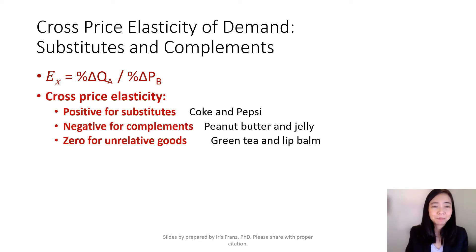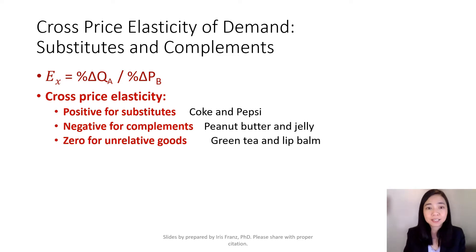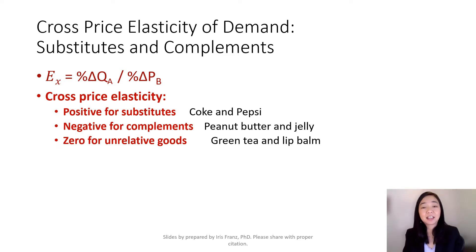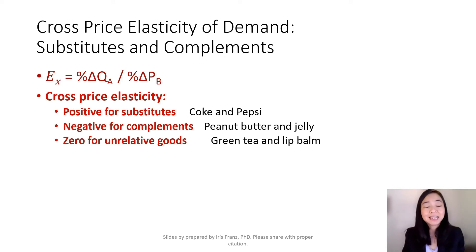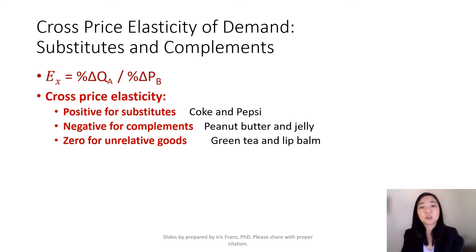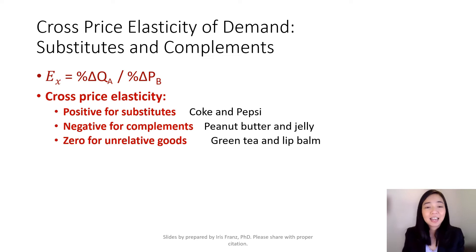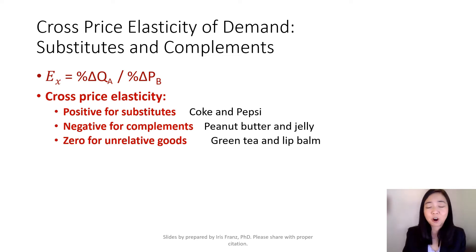Here is the bottom line. If you get a positive number for cross price elasticity of demand, then the two goods are likely to be substitutes. If you get a negative number, then the goods are complements. If you get a zero, then likely the two goods are unrelated.